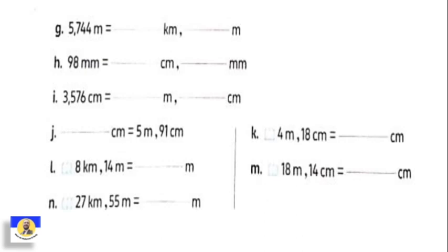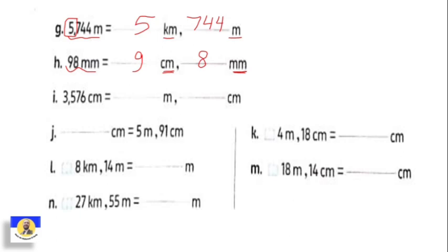Letter g: five thousand seven hundred forty-four meters equals how many kilometers and meters? One kilometer equals one thousand, so the digit in the thousands place — five — becomes five kilometers. The other digits seven hundred forty-four go to meters. Next: ninety-eight millimeters separated into centimeters and millimeters. Centimeter takes ten millimeters, so the digit in tens — nine — goes to centimeter, and the remainder eight goes to millimeter. For centimeters to meters: meter needs one hundred centimeters, so digits from hundreds place and above go to meter, remainder stays in centimeter. Seventy-six centimeters doesn't reach one hundred, so it stays in centimeters.